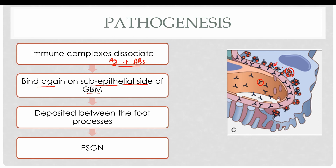These are the foot processes of the podocytes, and once the antigens deposit between the foot processes of the podocytes, the antibodies attach to these antigens forming antigen-antibody complexes. These complexes damage the foot processes of the podocytes, resulting in increased transport of red blood cells, white blood cells, and proteins across the glomerular basement membrane into the urine, causing hematuria, increased white blood cells in the urine, and proteinuria.